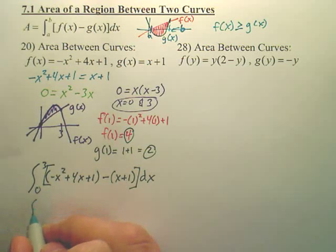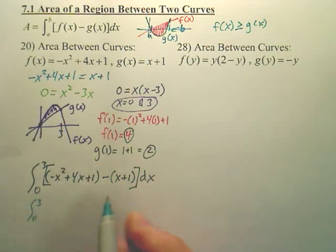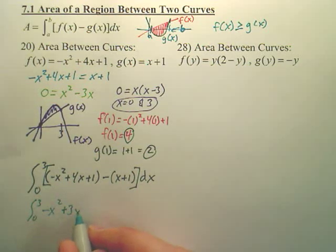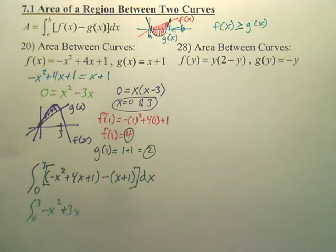So, we now have from 0 to 3. It looks like we have negative x squared still. Minus this over, we have positive 3x and minus this over. Does that look right? Looks good to me.